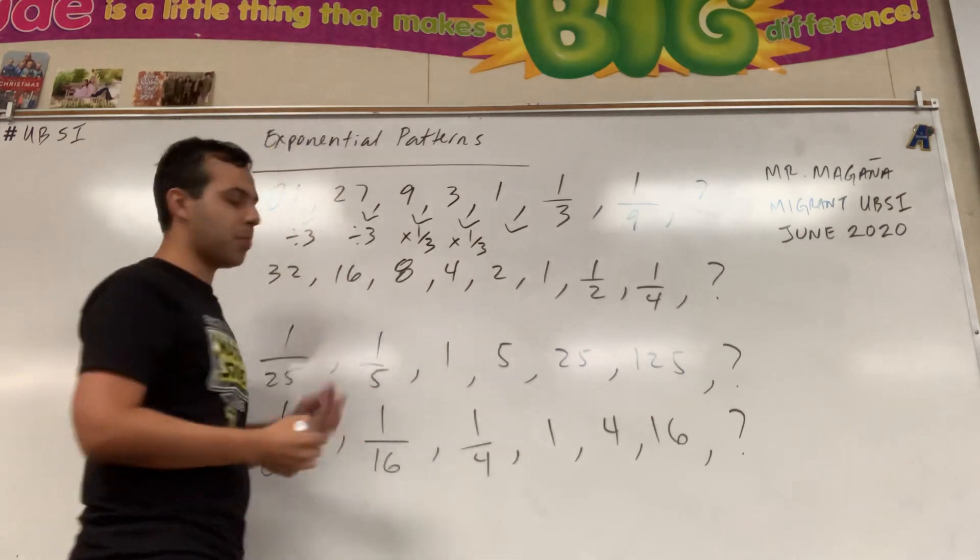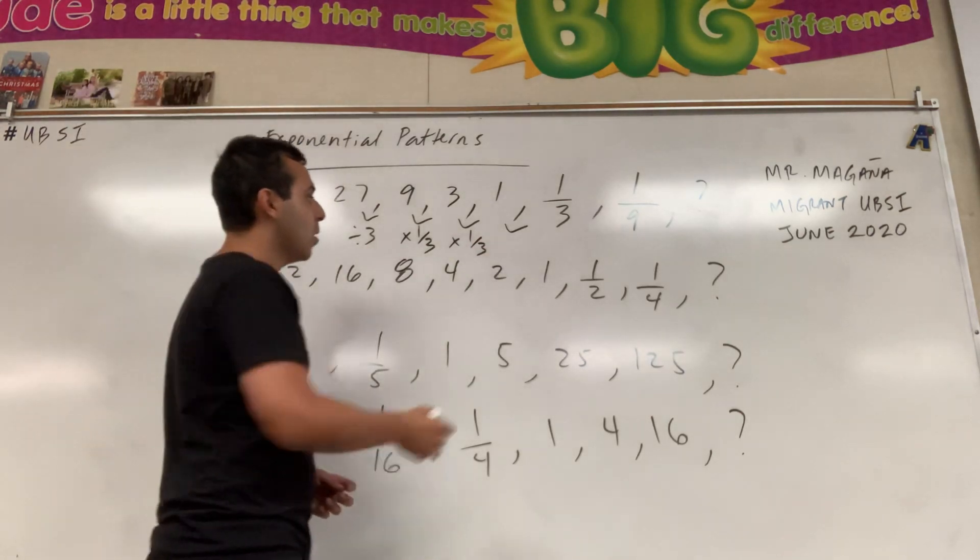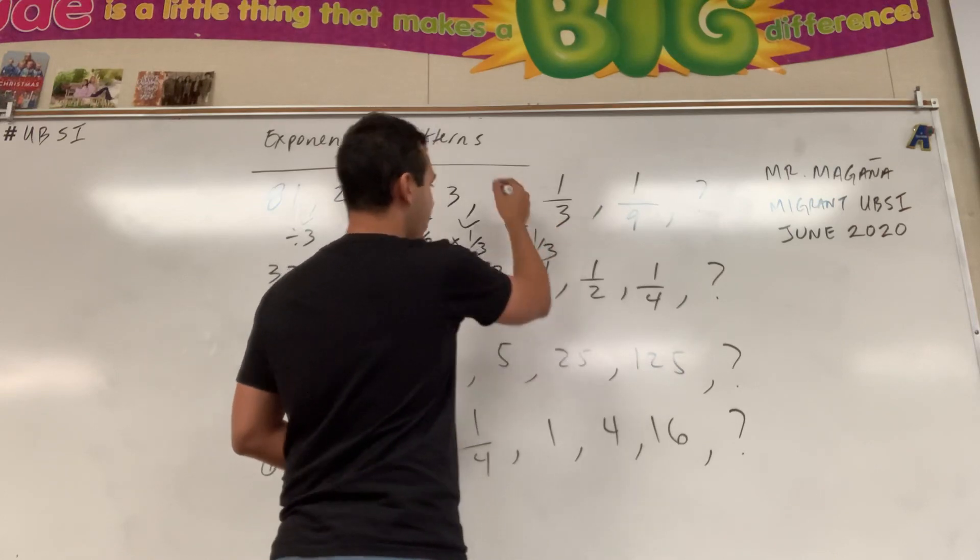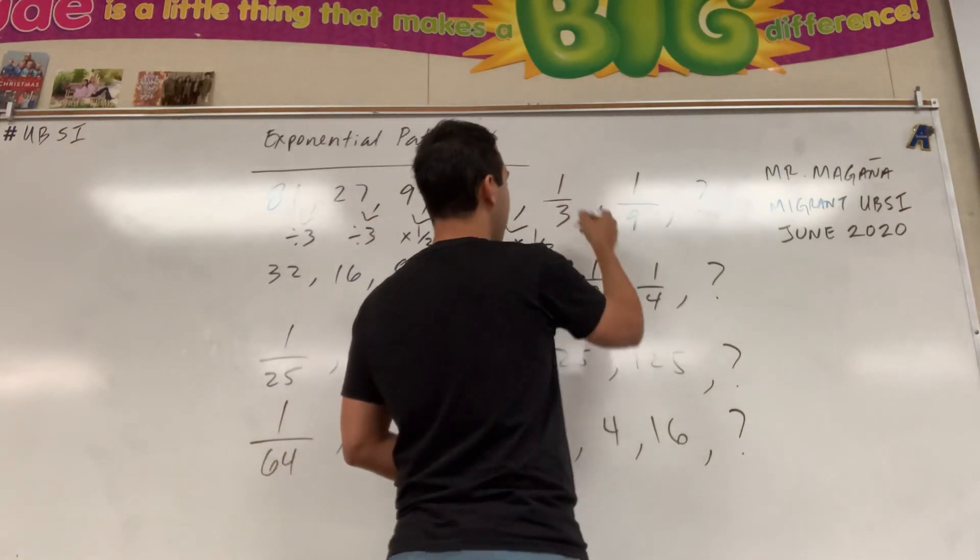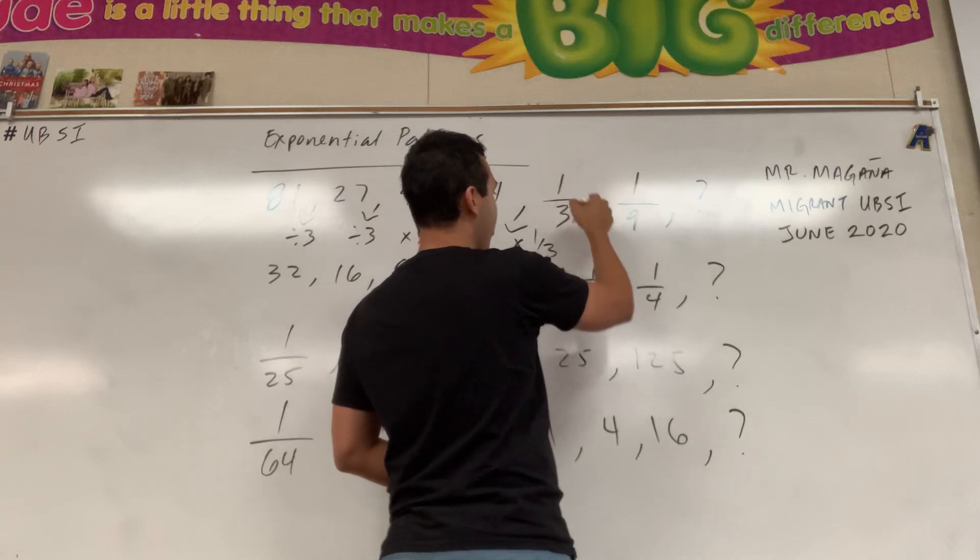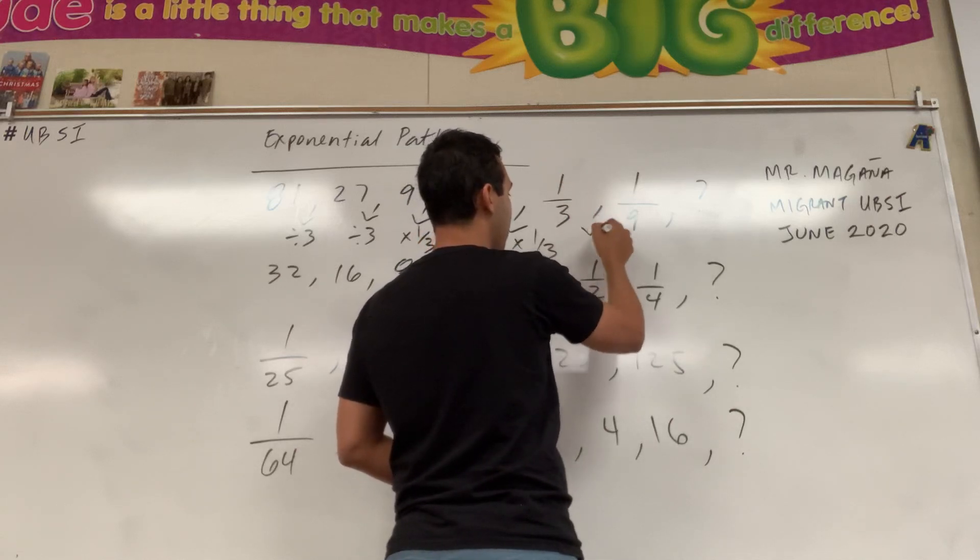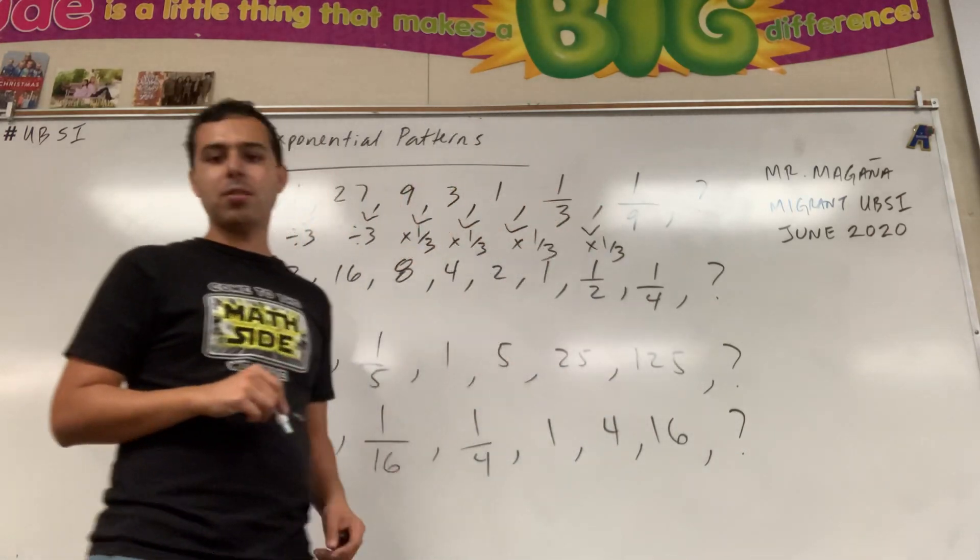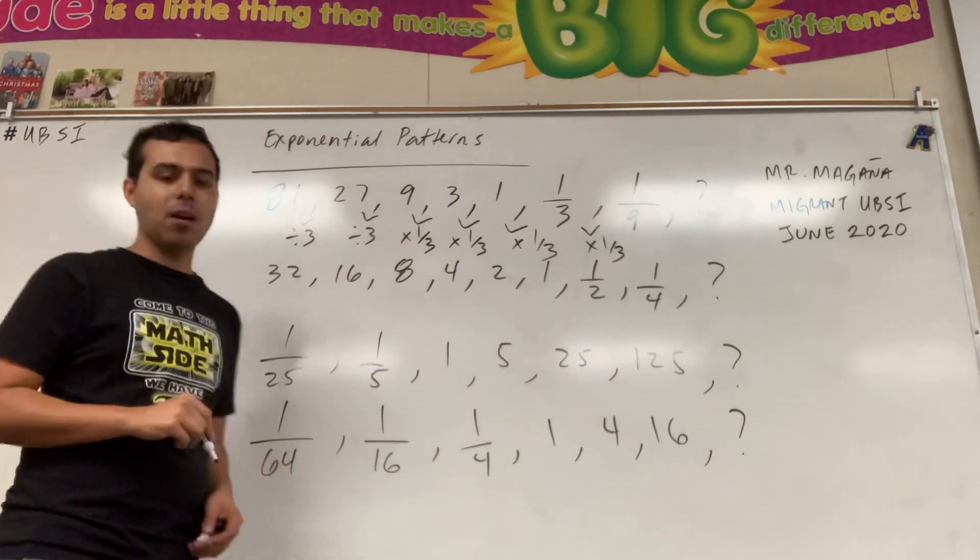Multiplication by one-third is the same thing as divided by 3, and so that explains why 1 becomes one-third when you divide it by 3, which explains why one-third divided by 3 is one-ninth, and so you could use that to find the next number in pattern.